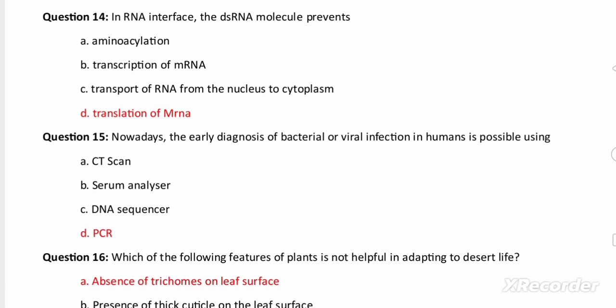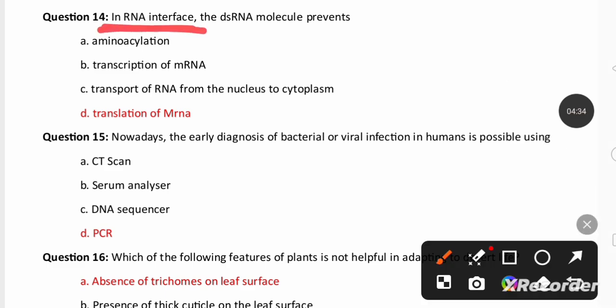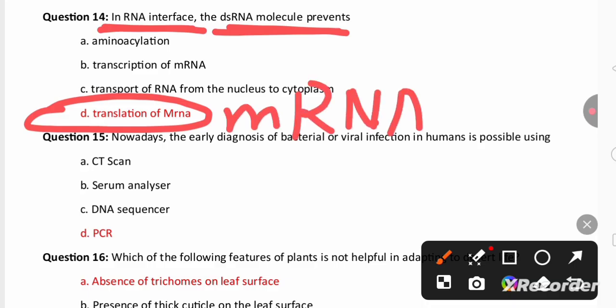Next: RNA interference or mRNA silencing. The double stranded RNA molecule prevents the translation of mRNA in the nematode. mRNA of the nematode does not undergo translation with the help of this RNA interference.